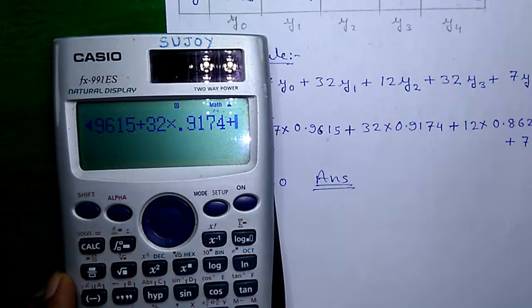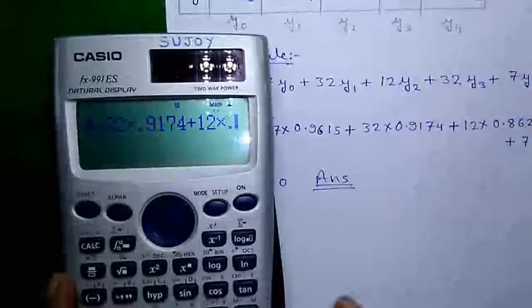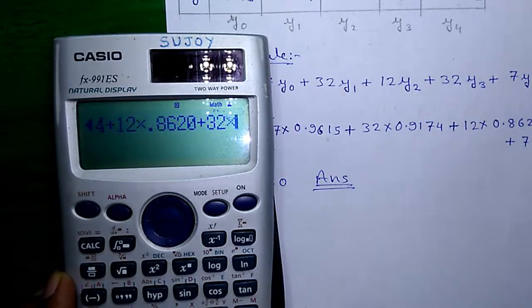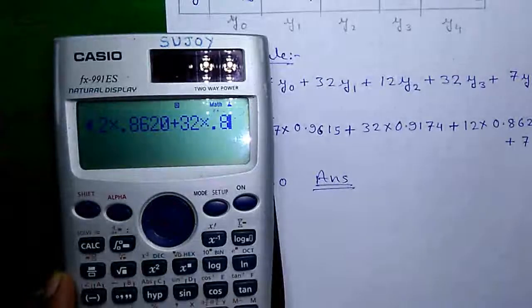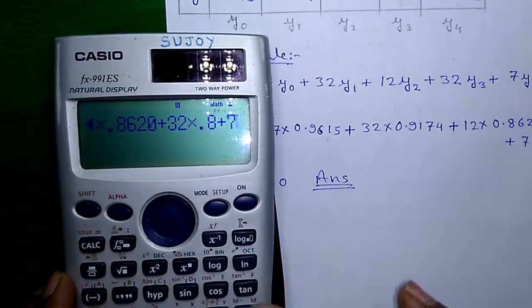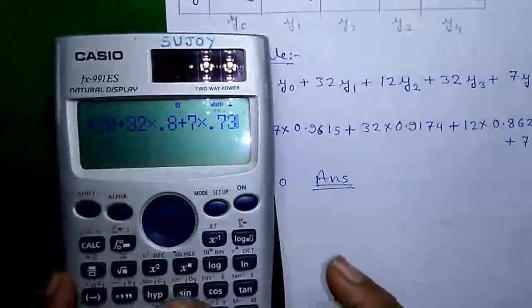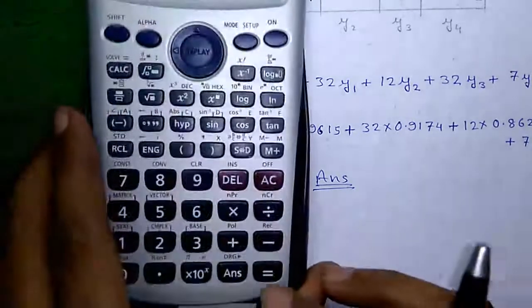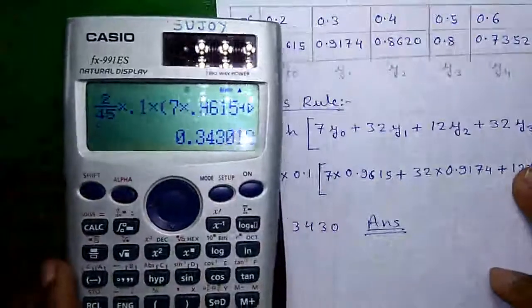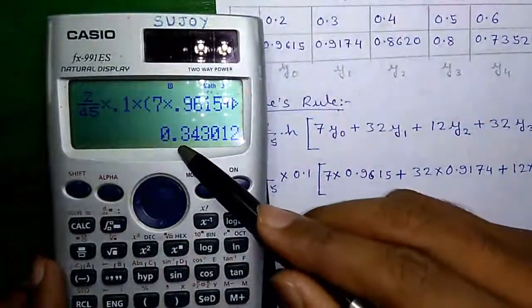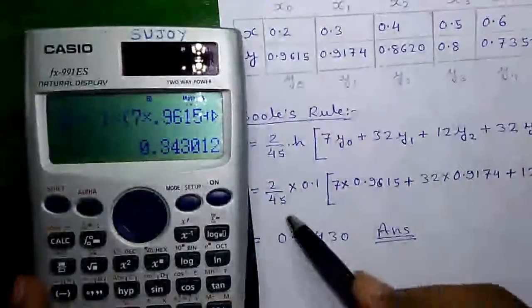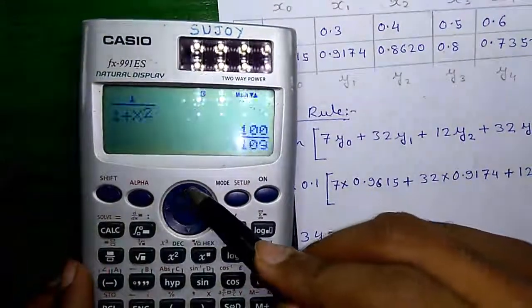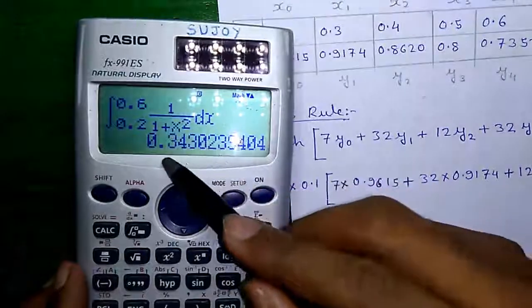12 into 0.8620 plus 32 into 0.8 plus 7 into 0.7352, close the bracket and press the equals button, which is equal to 0.3430. That is this value and this is our required answer which we obtained earlier by solving the integration problem. Isn't it cool?